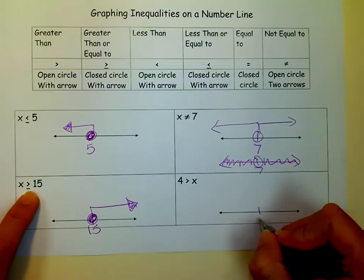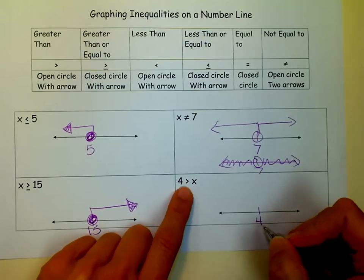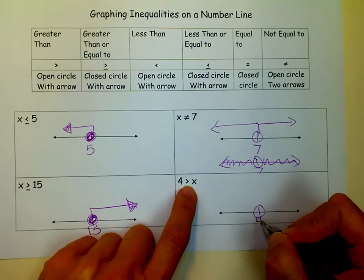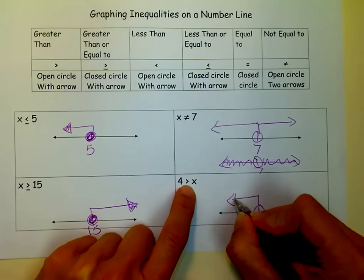Now I wanted to show you one where X is not on the left. If X is on the left, we follow the arrow. If X is not on the left, we don't follow the arrow. We go the opposite. So since that greater than sign is pointing to the right, I'm going to go the opposite direction and go to the left.